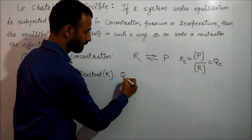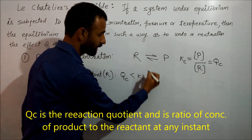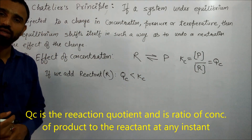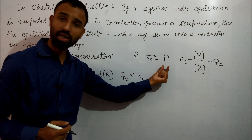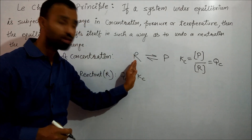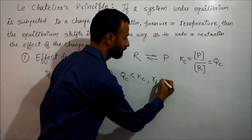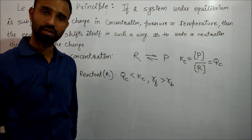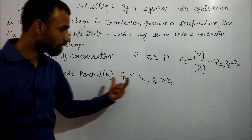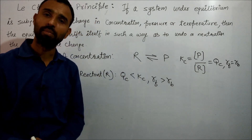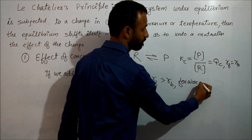When reactant is increased, Qc becomes less than Kc. We have discussed reaction quotient — if reactant is added, equilibrium tries to undo the effect, so reactant should decrease. When Qc is less than Kc, that means forward rate is greater than backward rate. At equilibrium, forward rate equals backward rate, but now forward reaction is greater than backward reaction, so forward reaction is favored.